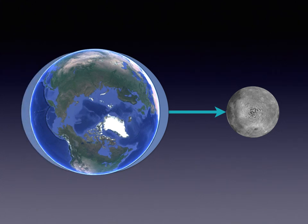There is a second tidal bulge on the other side of the earth facing away from the moon. To understand why this is, we need to consider more than just the force of gravity.